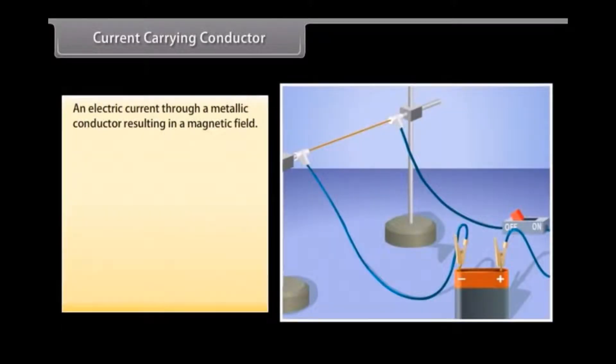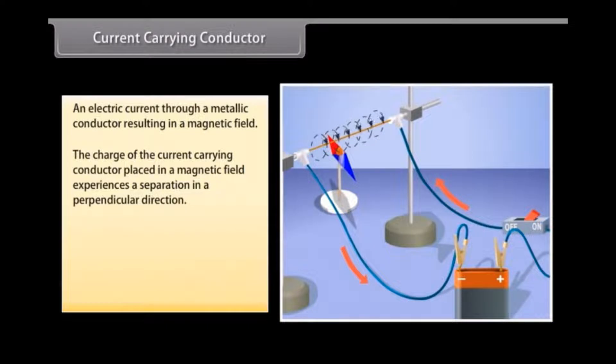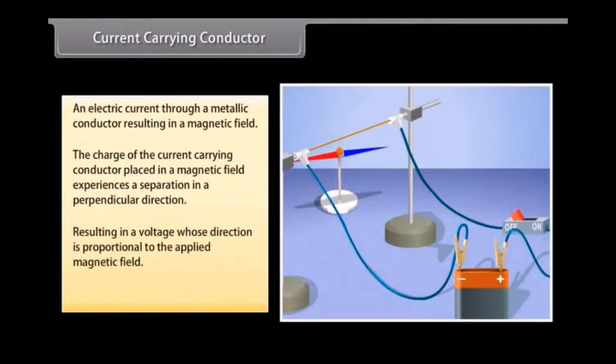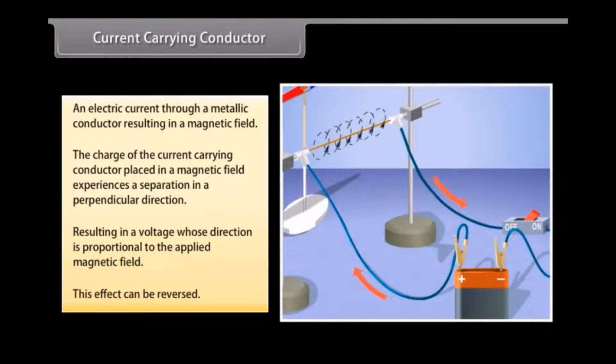Current carrying conductor. An electric current passing through a metallic conductor results in a magnetic field being created around it. The charge of the current carrying conductor placed in a magnetic field experiences a separation in a direction that is perpendicular to the current and the magnetic field. This results in a voltage whose direction is proportional to the applied magnetic field. This effect can also be reversed.